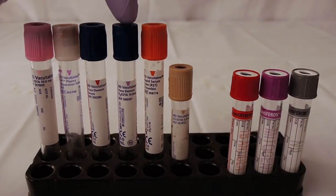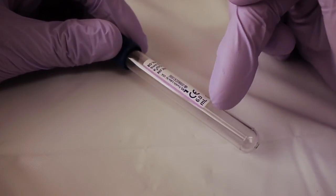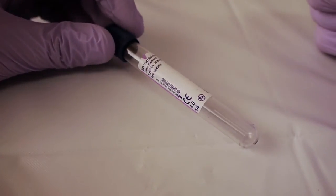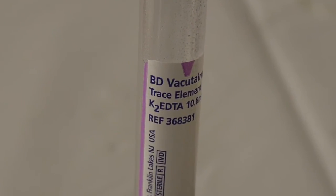The next tube, blue top, has a lavender stripe down the side. That indicates this is going to be an anticoagulant. This tube has EDTA. Used for the exact same test, it will just give you plasma instead of serum.